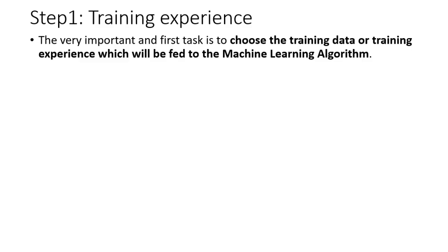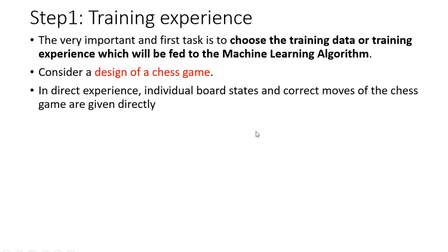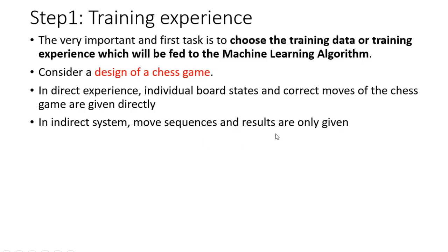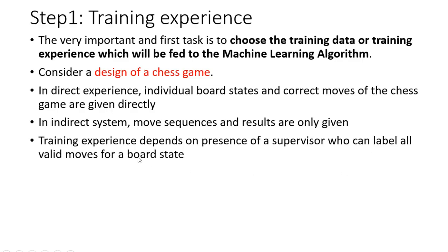The first and foremost important task in machine learning is to choose the training data or training experience, which will be fed to the machine learning algorithm. Let's consider a case study — designing a game of chess. If it is a direct experience in a chess game, the individual board states and the moves are given directly. But if it is an indirect experience, only the move sequences and results are given.